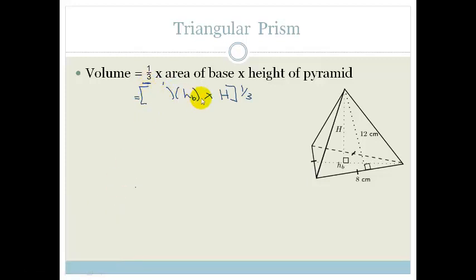So if I write this up properly, it's going to be a half times the breadth, the base, times by the height of the base, times h, times a third, and a half times a third is a sixth, so it becomes a sixth,